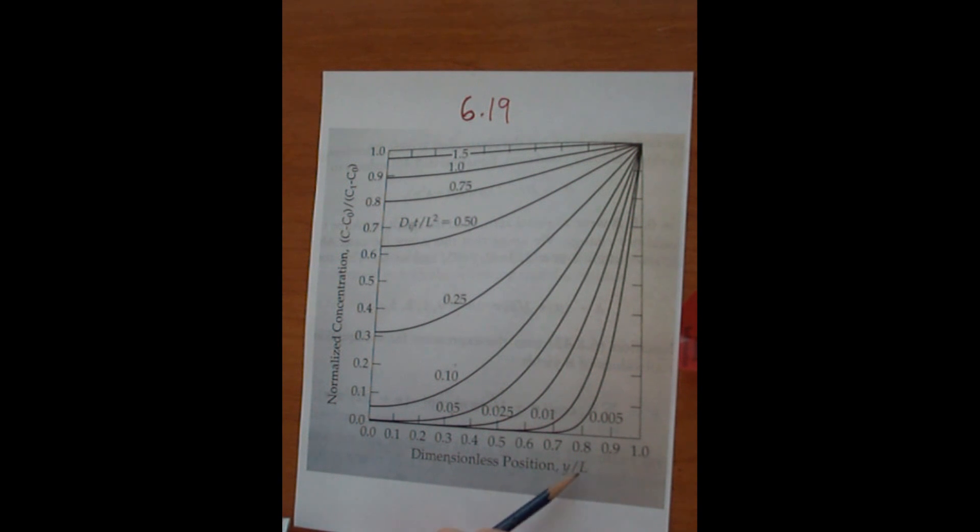So if you're given your positions and your time and your Dij, you can easily find your normalized concentration and back out the concentration just by following along the graph.